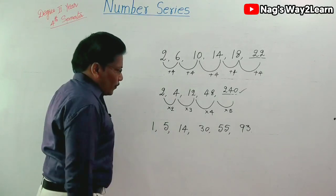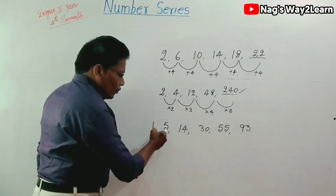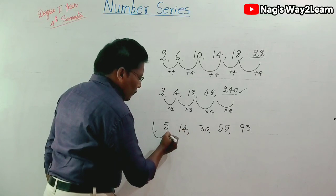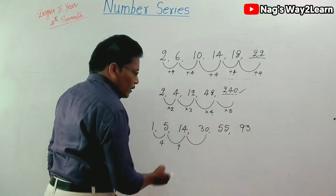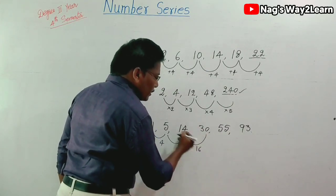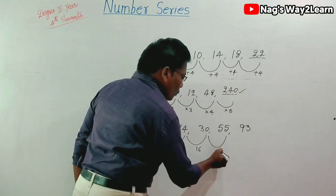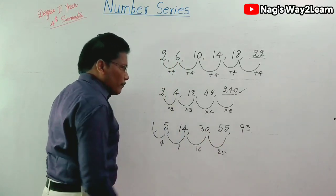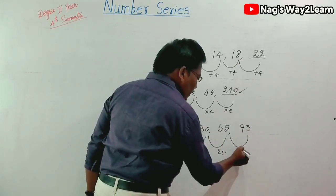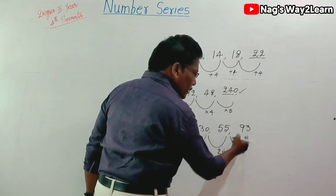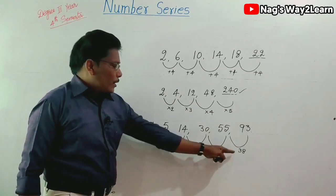1 becomes 5 — add 4. 5 becomes 14 — add 9. 14 becomes 30 — add 16. 30 becomes 55 — add 25. 55 becomes 93 — add 38. So the differences are 4, 9, 16, 25, and 38.